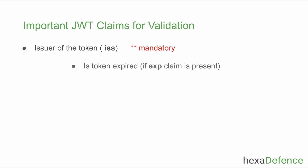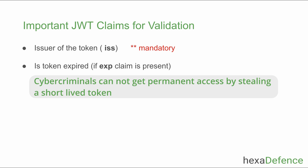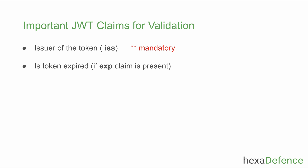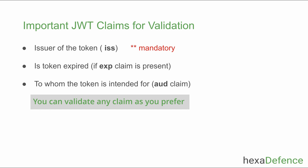Next, you need to validate whether the token is expired or not. Tokens have a lifetime, so if a token is stolen it can only be used for a limited time period. Next is the audience. The same identity provider can generate access tokens for multiple clients to access different backend APIs, so you need to make sure the token you are receiving is intended for your specific backend. Audience validation is optional. You can also validate other attributes according to your needs.